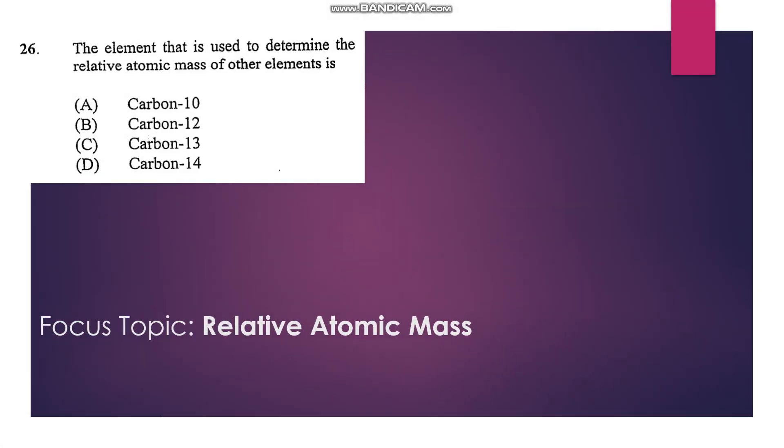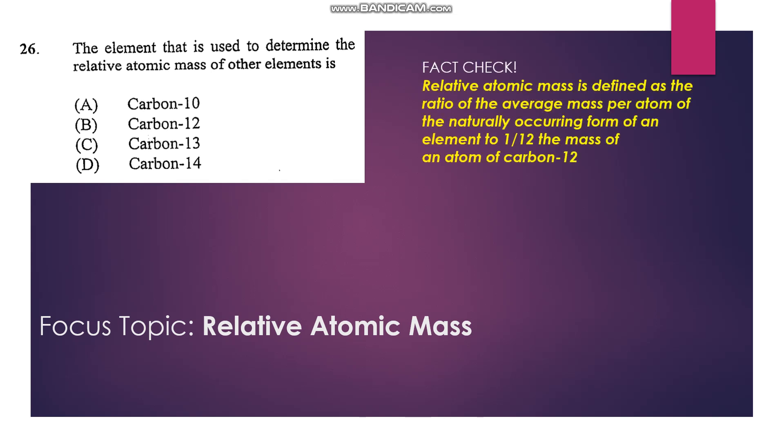Number 26: The element that is used to determine the relative atomic mass of other elements... Relative atomic mass is defined from the atomic mass of carbon-12. Therefore B is our answer.